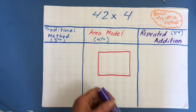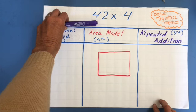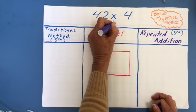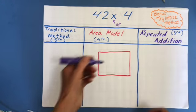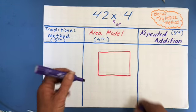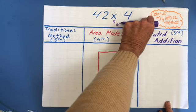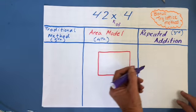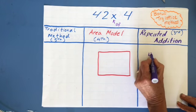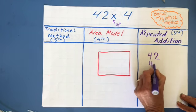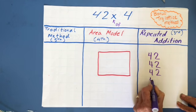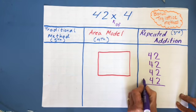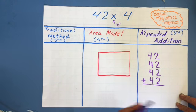For repeated addition, this problem says 42 times 4, or 42 groups of 4. We could do 42 groups of 4, but that would take too long. So I'm going to try backwards. Because of the commutative property of multiplication, I know this could be 4 groups of 42. So I'm going to do 4 groups of 42 — 1, 2, 3, 4 groups. Multiplication can also be seen as repeated addition.